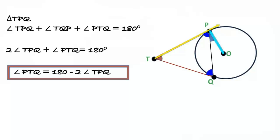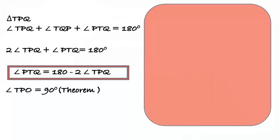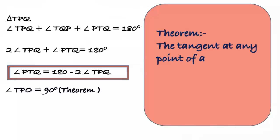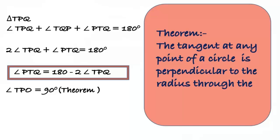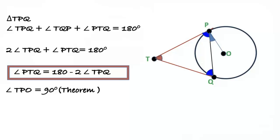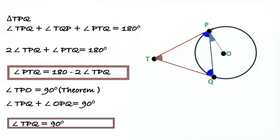Angle TPO equals 90 degrees, because the tangent at any point of a circle is perpendicular to the radius through the point of contact. Therefore, angle TPQ plus angle OPQ equals 90 degrees.